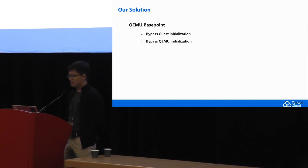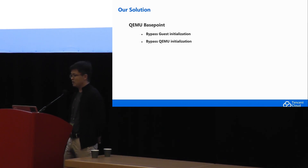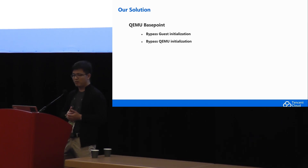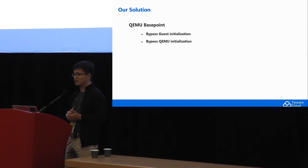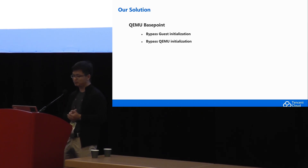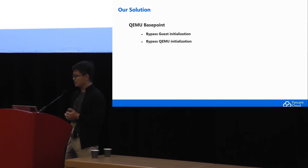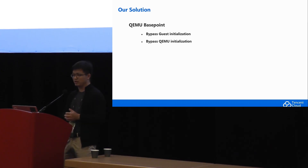So based on that, our solution — we call it QEMU base point — by using our solution, we can start up a VM in just about 35 milliseconds on default, and it uses very little memory. Basically, our solution can bypass the guest kernel init and also can bypass the QEMU init.